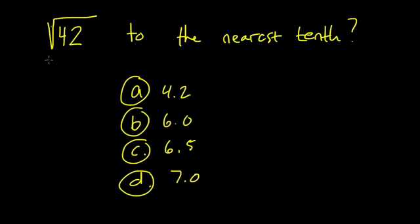Okay, so let's say you're given a problem like this, which says find the square root of 42 to the nearest tenth, and you're given four choices. Well, the first thing I would do, even before I look at the choices, is to say what the square root of 42 is between.